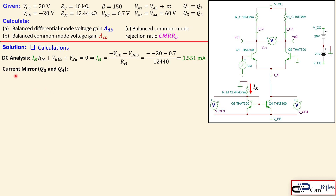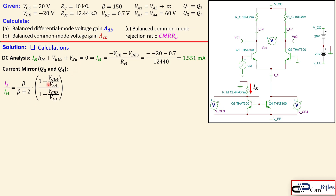Next we calculate the tail current IX from the current mirror formed by Q3 and Q4. Because the Early voltages VA3 and VA4 are finite (not infinite), the ratio IX/IM is not simply one — we need a more complete expression that includes the collector-to-emitter voltages VCE4 and VCE3, as well as the beta/(beta+2) ratio.